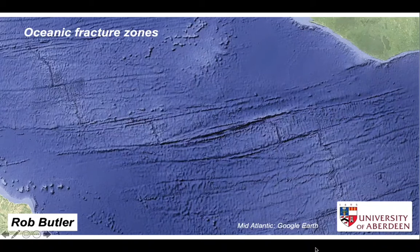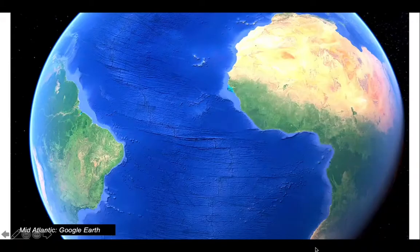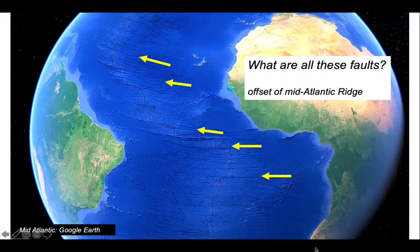In this presentation, we'll answer that question as though we were back in the early part of the 1960s when bathymetric data were first generally available to tackle the problem. But we're going to use modern data such as you can see on virtual globes. So what are these faults? They seem to be offsetting the ridge system that runs down the middle of the Atlantic.